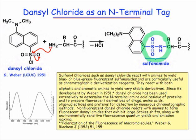Although dansyl chloride is not UV-active, the sulfonamide formed upon tagging is a highly sensitive chromophore that can be used to distinguish the tagged amino acid from others in the peptide. Interestingly, dansyl chloride was pioneered as a peptide tag in the early 1950s by Gregorio Weber, a professor at the University of Illinois.